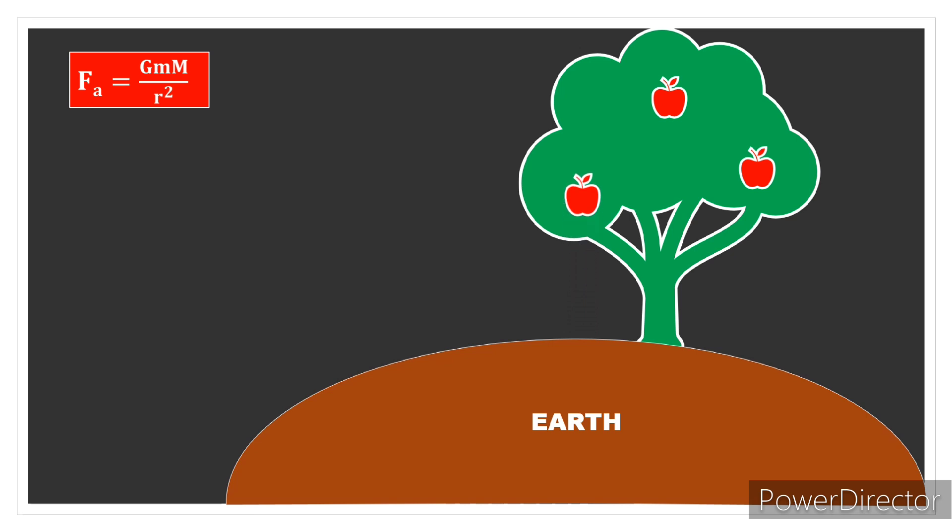Here, small m is the mass of the apple, capital M is Earth's mass, and R is the distance between them, which is the radius of the Earth.